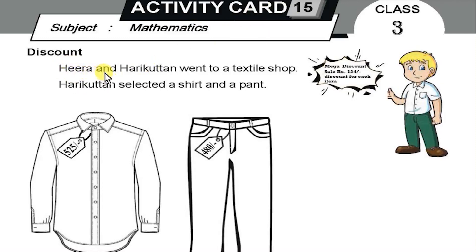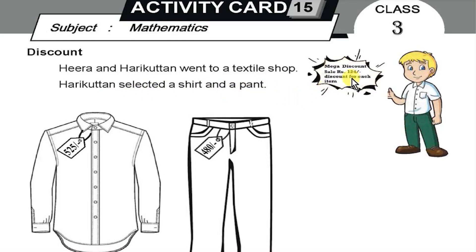This is activity card 15: Discount. Hera and Harikutan went to a textile shop. Harikutan selected a shirt and a pant. There is a mega discount sale — 124 discount for each item.